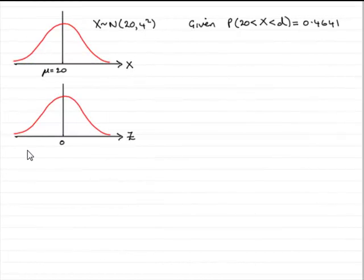Hi. In this next part of the question, we're given that the probability that x lies between 20 and a value d is 0.4641 and asked to find the value of d.